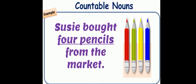Example number 1. Shushi bought 4 pencils from the market. Here pencils can be counted: 1, 2, 3, 4. So pencils are countable nouns.